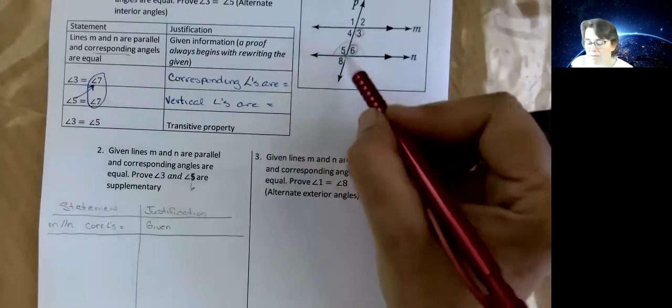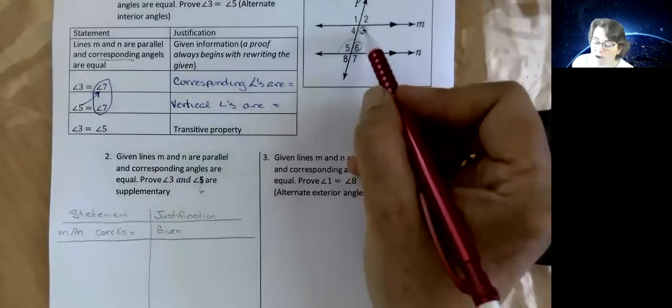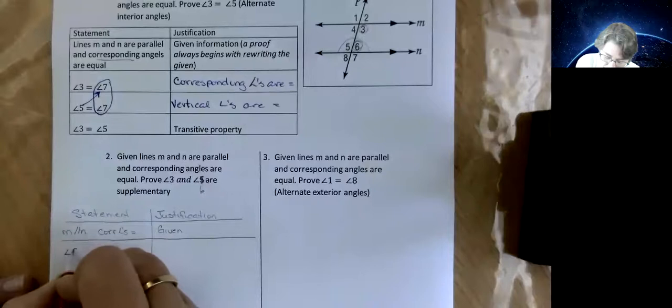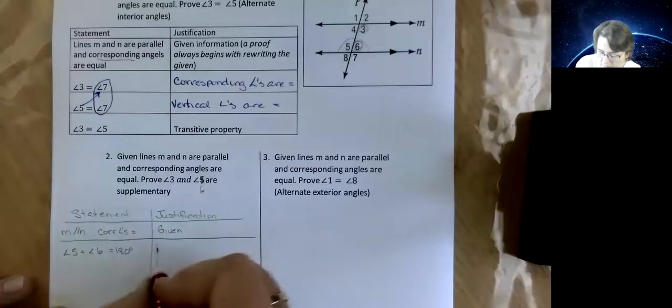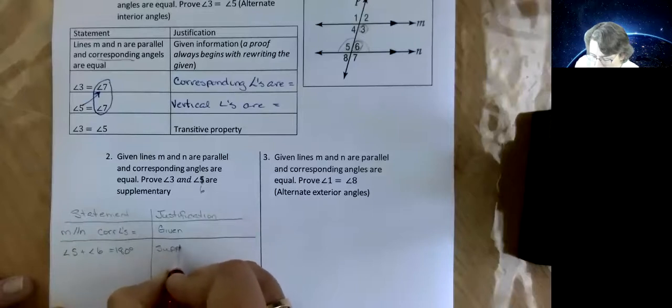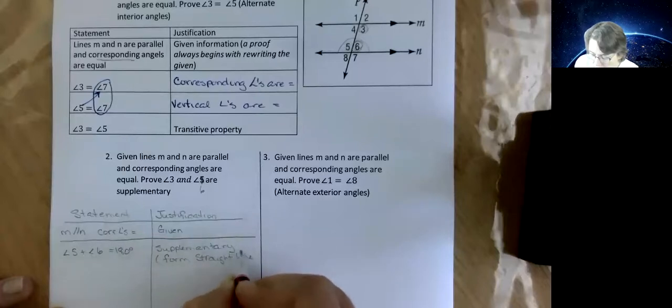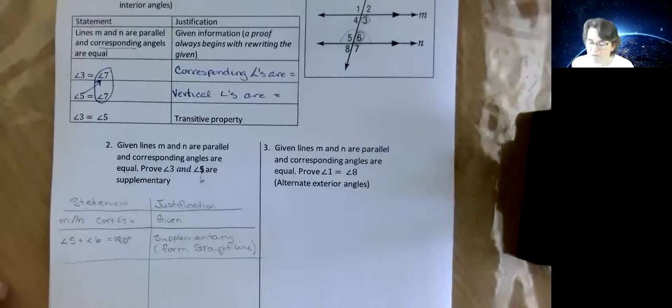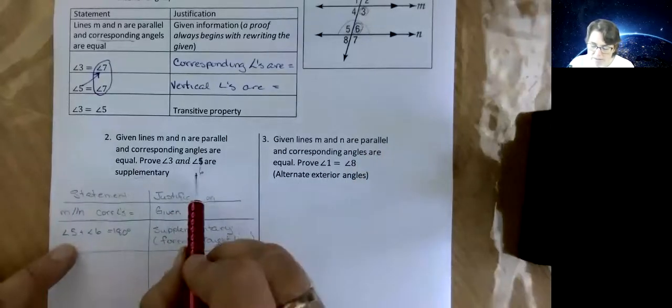But then there's a relationship between 3 and 5. And 3 and 5, if you look at the diagram they look the same size, but they look the same size because they're alternate interior angles. So I don't know which to start with, and it really doesn't, the order doesn't matter too much. So I'm going to go angle 5 plus angle 6 is 180 degrees. And the justification is they are supplementary angles on a straight line. It wouldn't really matter whether you wrote supplementary or form a straight line.